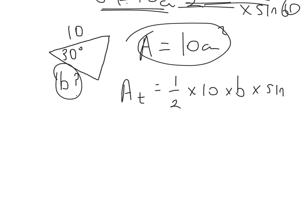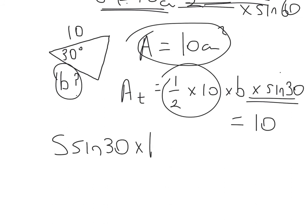times sine 30. Now, we know that that equals the area of the triangle, which we know is 10. So a half of 10 is 5. So we've got 5 times sine 30. So 5 sine 30 times b is equal to 10. And then b would just be equal to 10 divided by 5 sine 30.